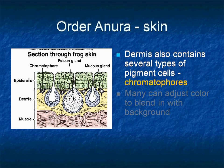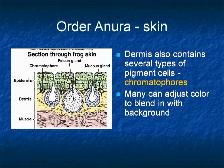Frog dermis also contains several types of special pigment cells called chromatophores. These are branched cells that contain pigments which may be concentrated to a small area or dispersed throughout the cell to control color. Using this mechanism, many frogs adjust their color with the background and thus camouflage themselves.